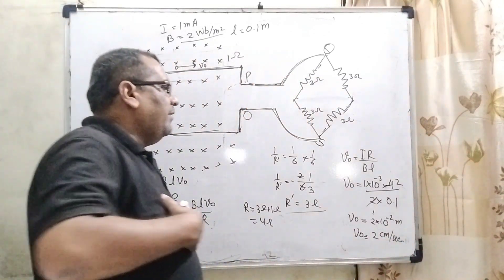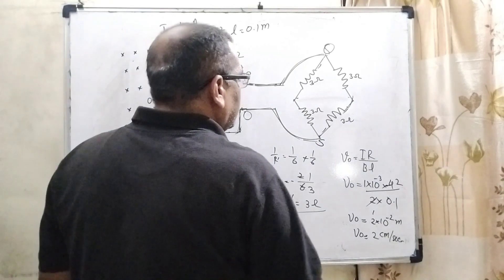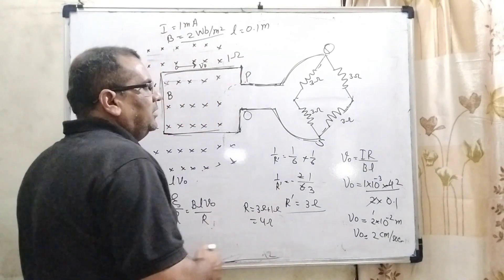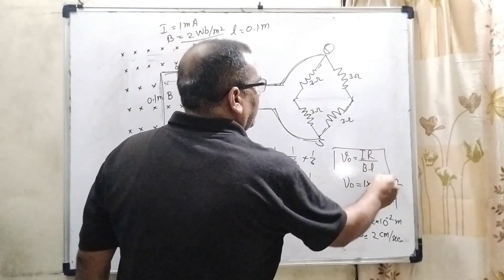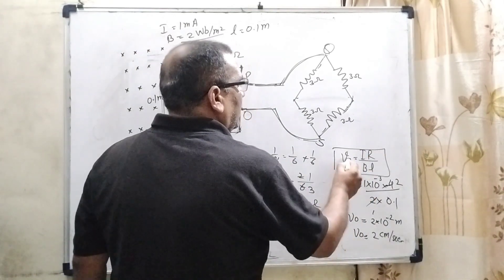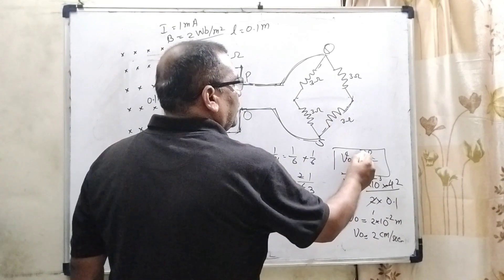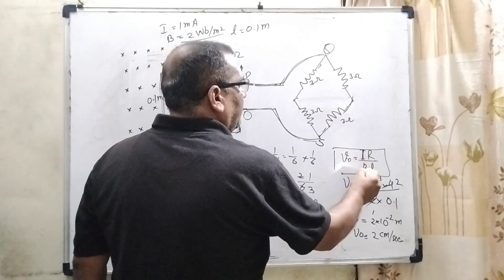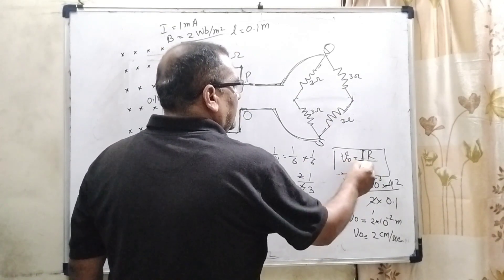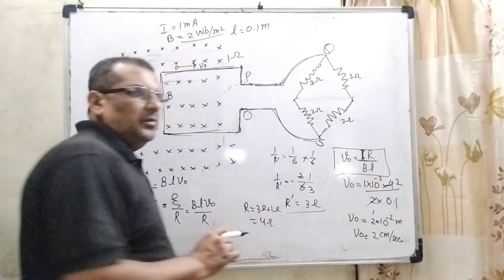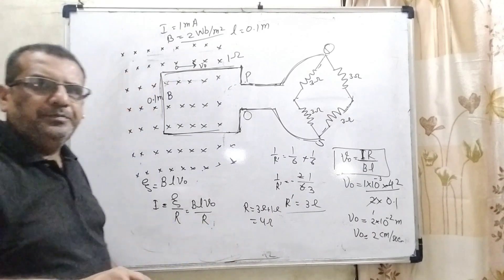The second thing we have to find out is the direction of the current. So from this formula V₀ equal to I times R divided by B times L, the direction is determined along with the direction of I.